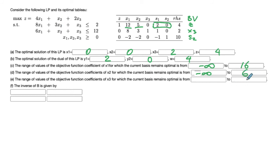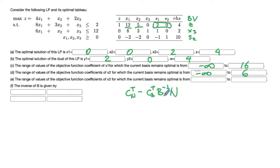For x3, which is a basic variable, we need to do more work. We must compute the vector of non-basic variable coefficients in row zero and ensure it remains non-positive (in dictionary form). The formula is: minus c_N^T minus c_B^T B^{-1} N, and we need this to remain less than or equal to zero. B^{-1}N can be read from the tableau columns corresponding to the non-basic variables x1, x2, and s1.